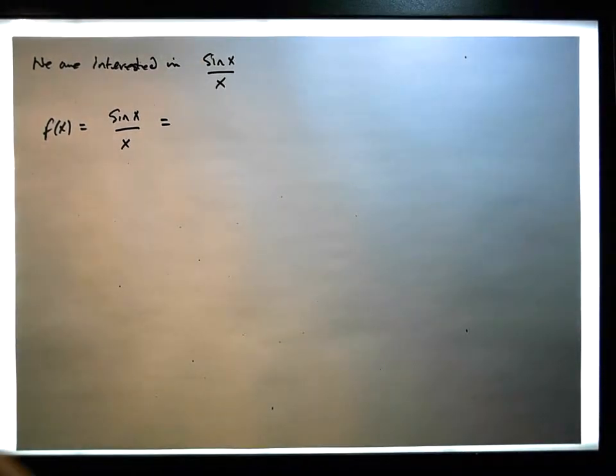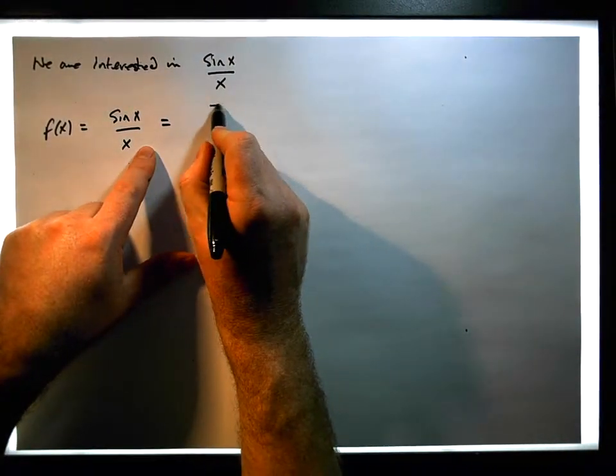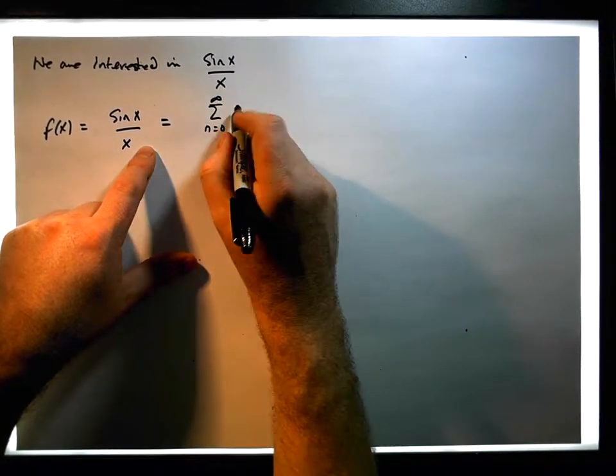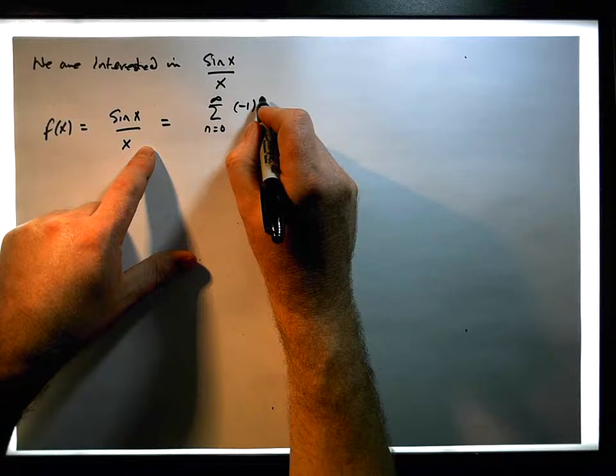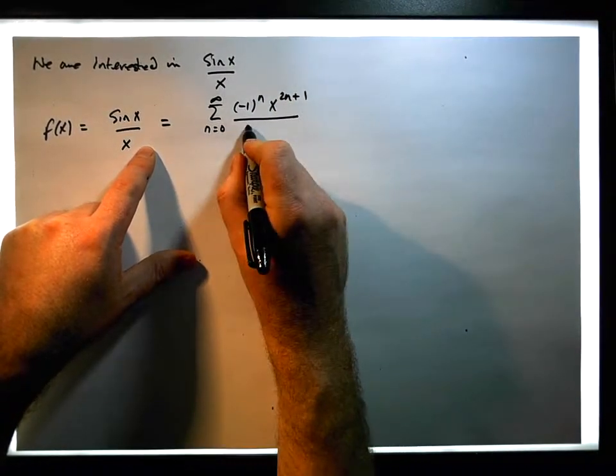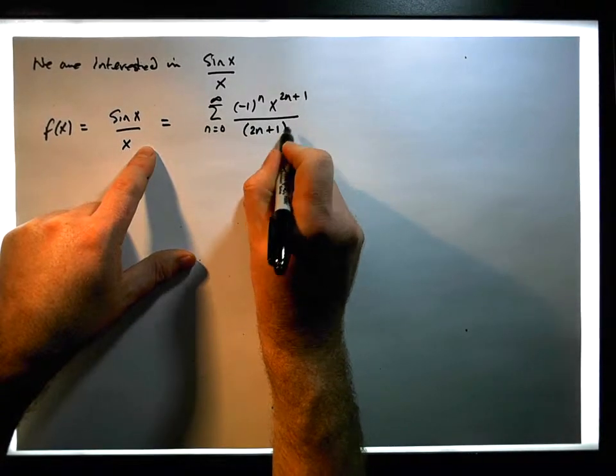And x, from the Maclaurin perspective, is basically the sum of, from n equals 0 to infinity, of minus 1 to the n times x to the 2n plus 1, all over 2n plus 1 factorial.